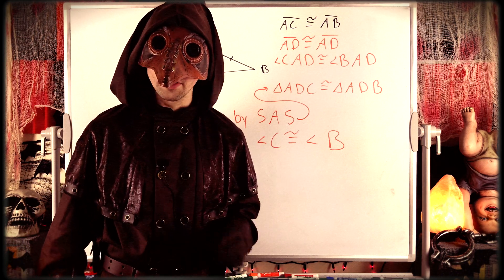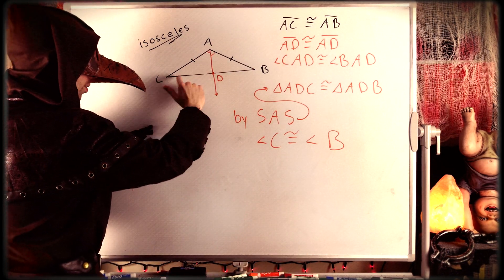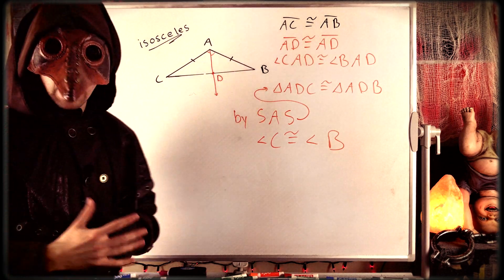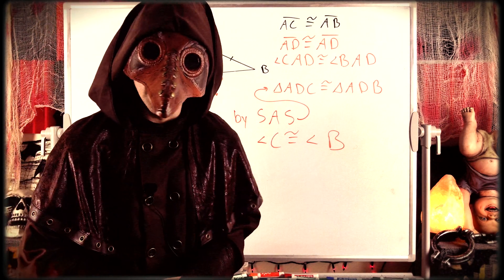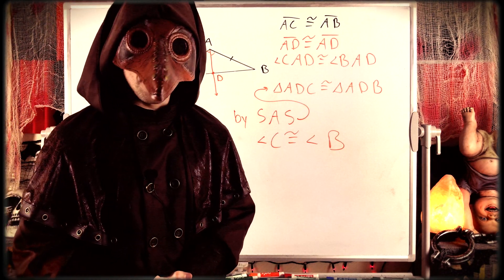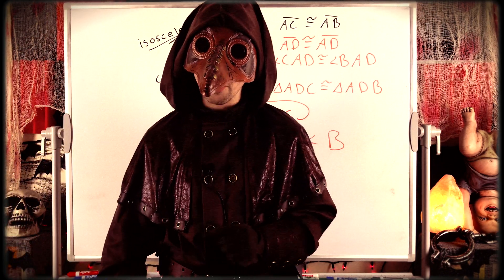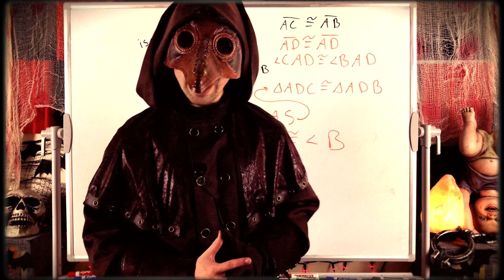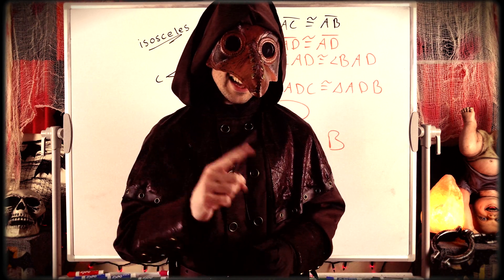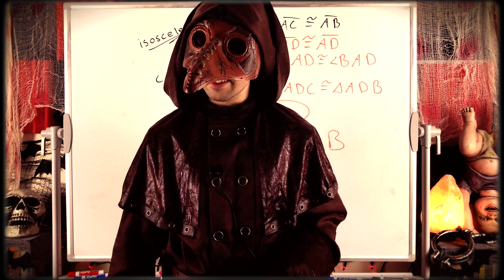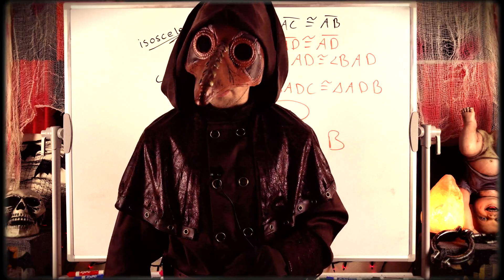And it turns out the converse of this theorem is true as well. So if we just knew that angle C was congruent to angle B, we would be able to show that these two sides are congruent, and thus the triangle is isosceles. But we'll leave that for another time. For now, I hope this video helped you understand how to prove the isosceles triangle theorem. Let me know in the comments if you've got any questions, need anything clarified, or have any other video requests. Thank you very much for watching. I'll see you next time, and be sure to subscribe for the spookiest math lessons on the internet.